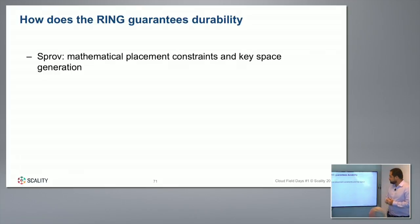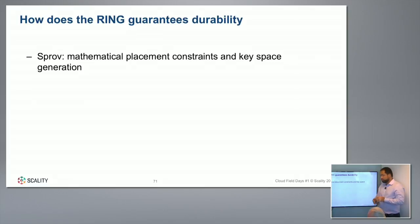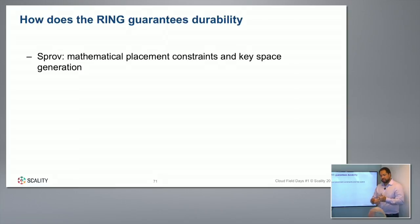We have a tool called sPROF that runs automatically. From a mathematical point of view, you define your topology — multiple racks, data centers, servers with 80 drives — and the mean time to failure on your drives. It computes all the projections of copies and replicas, and simulates what happens if you lose a node or multiple nodes simultaneously, doing all these checks automatically to produce a key space that gives the best durability.